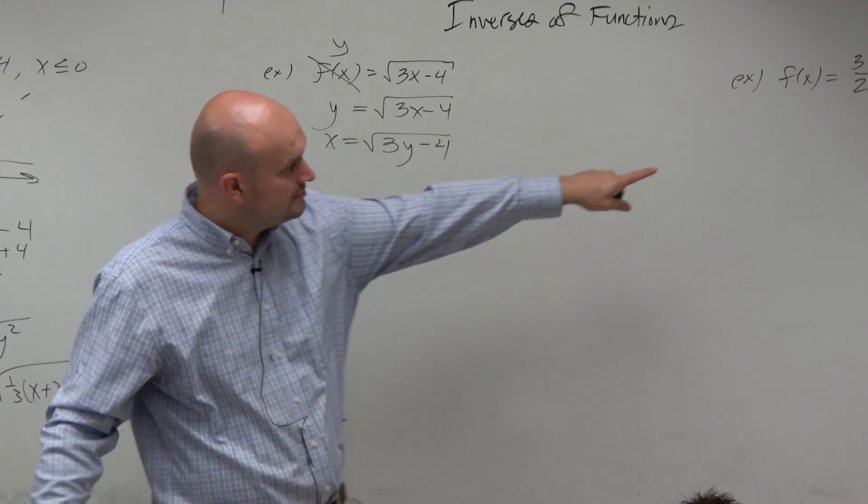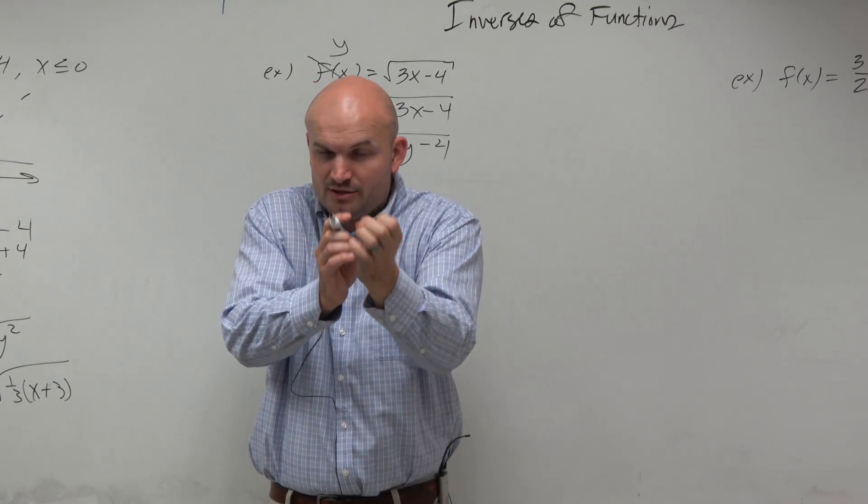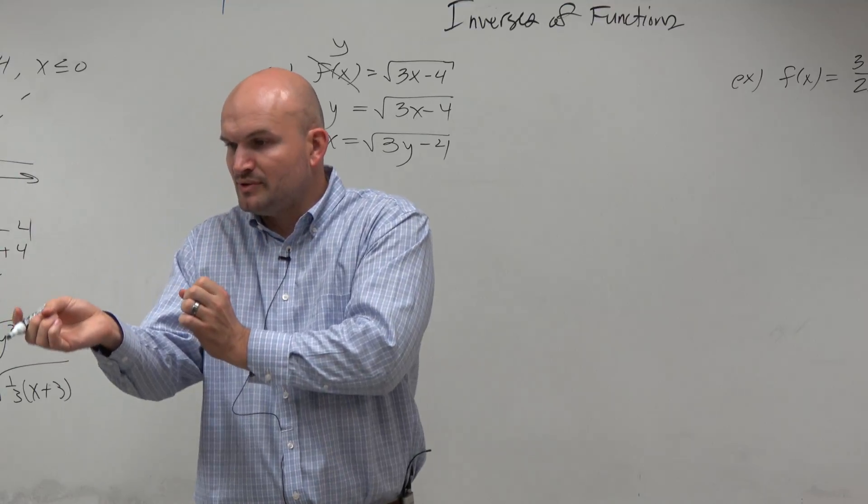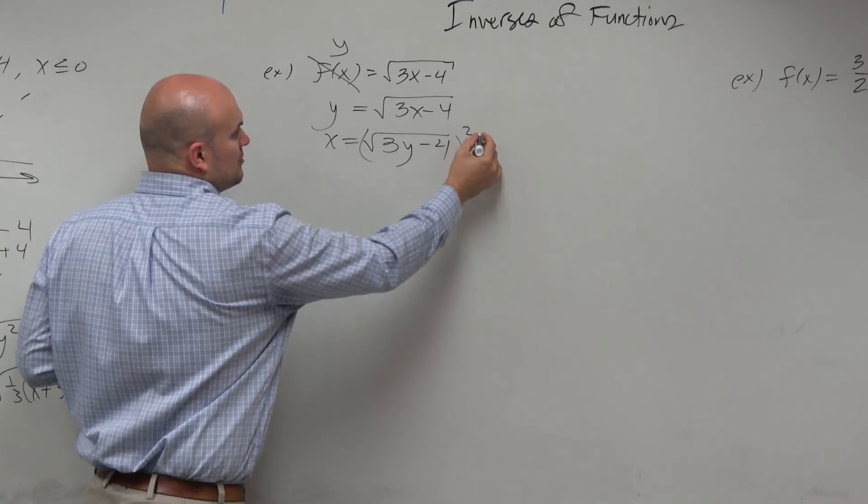Because that's what we do. That's the rule process. But remember, the graph, the points on one graph is swapped with the inverse. So the purpose of this is how to find the inverse. And then do the domain and range.